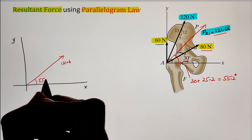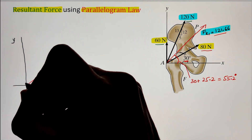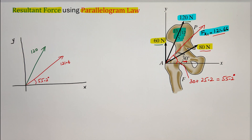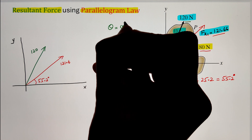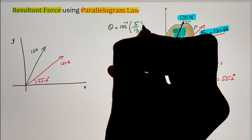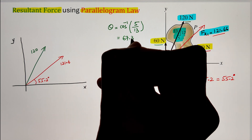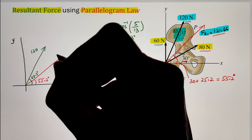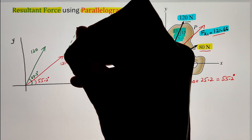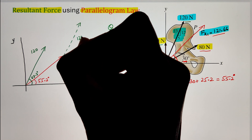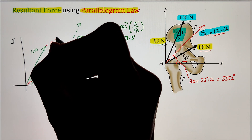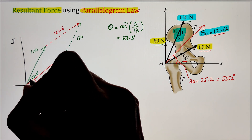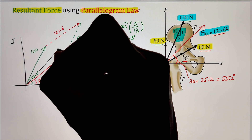We can calculate the angle the 120 Newton force makes from the horizontal axis by taking the cosine inverse of the base 5 divided by the hypotenuse 13, giving 67.3 degrees. Once we have identified both force magnitudes and angles, we draw our parallelogram by translating the 120 Newton force with its tail on the head of the 121.66 Newton force. Similarly, we translate the 121.66 Newton force with its tail on the head of the 120 Newton force, completing the parallelogram.